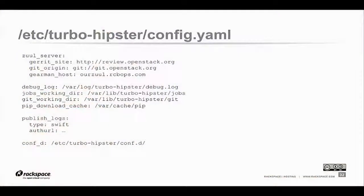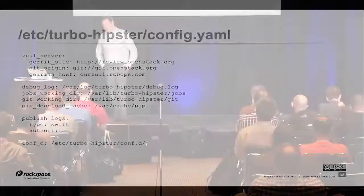This is what a TurboHipster config looks like. It wants to know information about the Zuul server, the Gerrit site — where to get the patch from — the git origin for master or stable branches, and the gearman host. Gearman is the protocol that Zuul talks to its workers over. Zuul comes with a built-in gearman server so it's usually the same, but you can use a different one. We set up directories for log storage and git checkout, how to publish those logs — we use Swift, but you could use other things like copying on disk. You can extend the config in a conf.d directory.